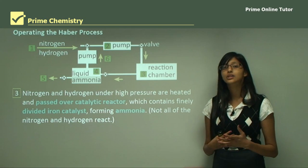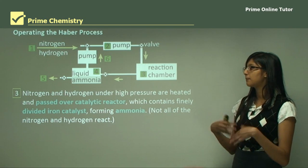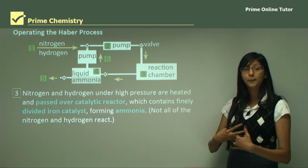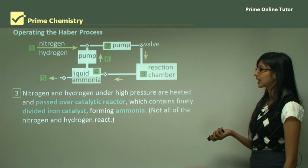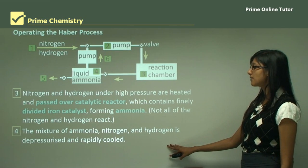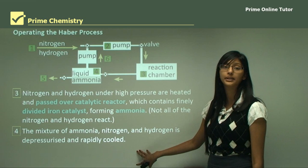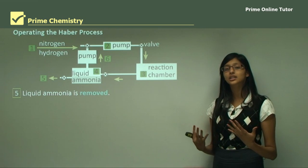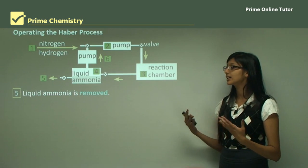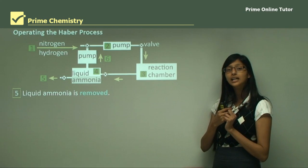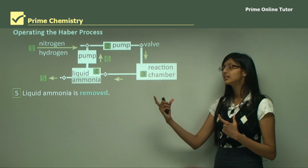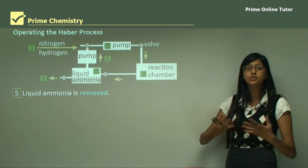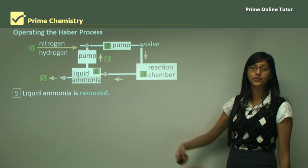Not all of the nitrogen and hydrogen react in the catalytic reactor — most reacts but not all. To maximize yield, the mixture of ammonia, nitrogen, and hydrogen is depressurized and rapidly cooled, and liquid ammonia is removed. Because the production of ammonia is in a state of equilibrium, continually removing the product means there is less product and more reactants. The forward reaction is therefore favored, causing the reaction to produce more product. Hence, liquid ammonia is constantly removed to increase the yield.